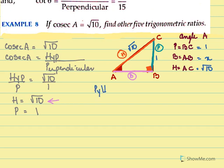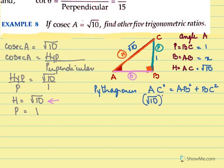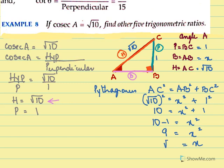I need to find my base using Pythagoras. For Pythagoras, I have AC square equal to AB square plus BC square. So AC is under root 10, the whole square equal to AB is X square, and BC is 1 square. So 10 equal to X square plus 1. Then 10 minus 1 equal to X square, so 9 equal to X square. So X equal to under root 9, so X equal to 3. So my base AB is 3.